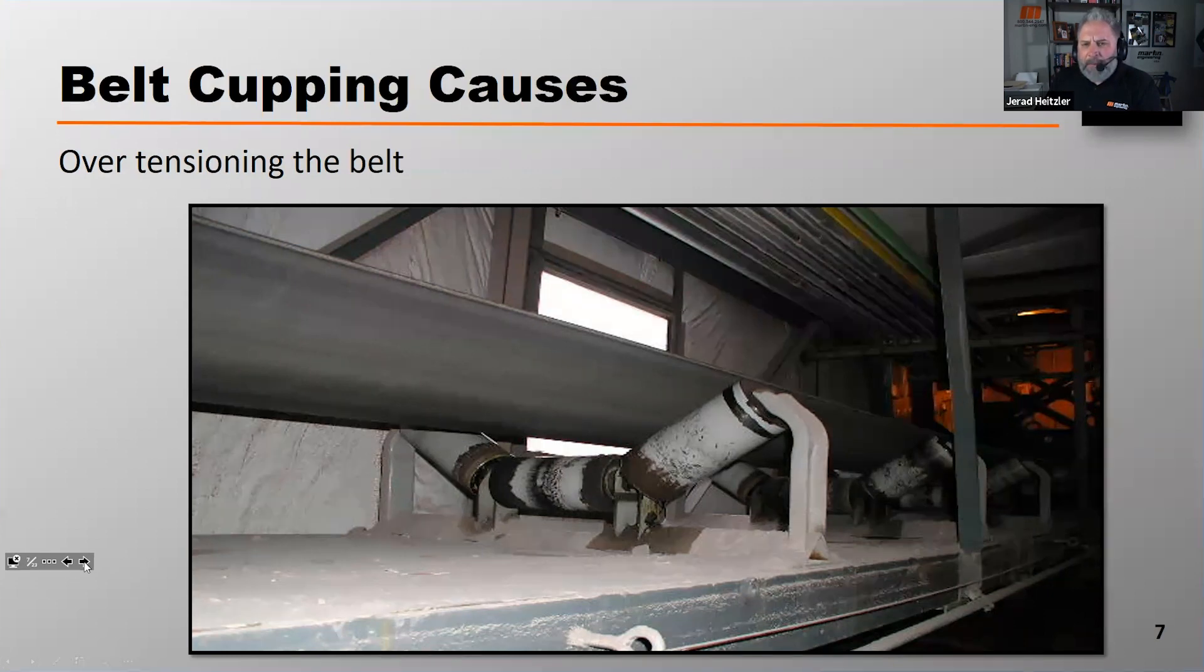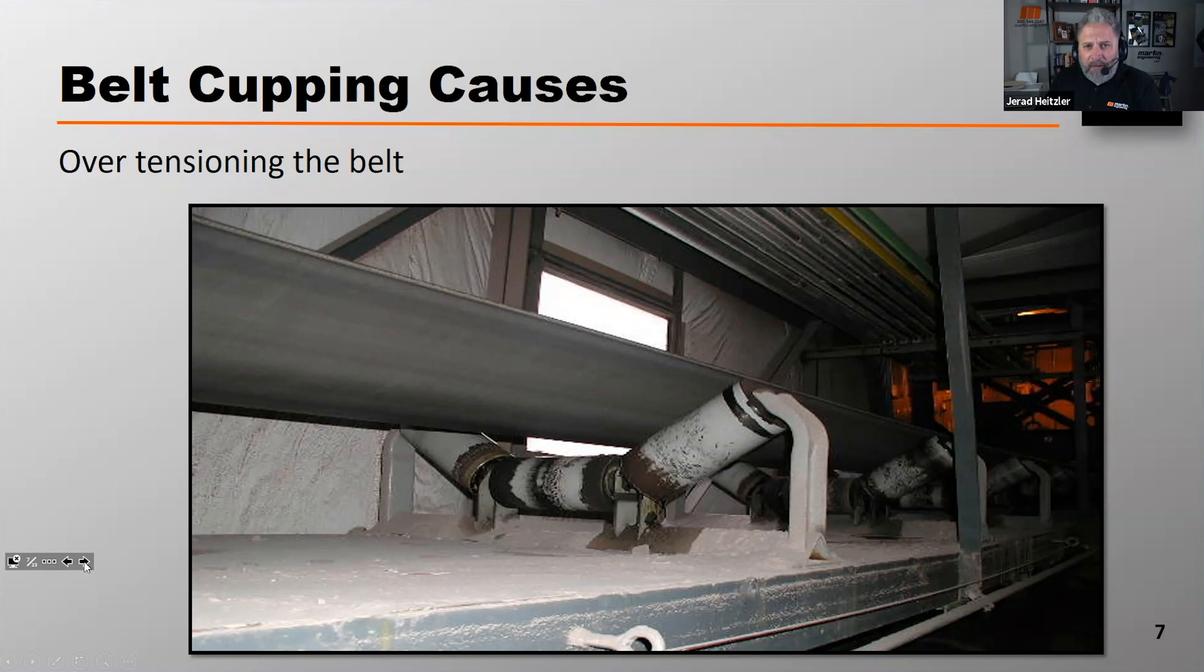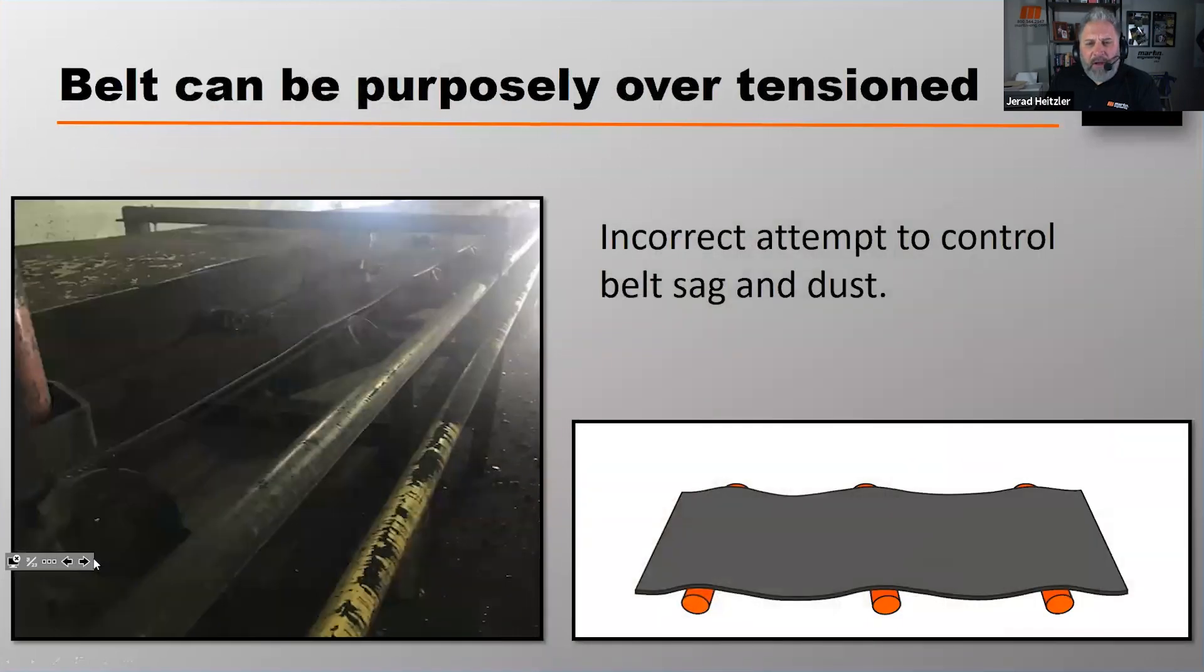It's not uncommon to see belts be over-tensioned. One of the problems that we often see is that belts that are in a load zone, in the loading area of a conveyor belt, as that belt's being loaded material, it's not uncommon for material to spill at that load zone. And that material can often spill because of the sag that the belt might have in between the supporting idlers in that skirted area.